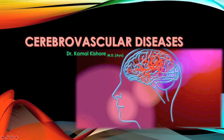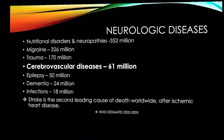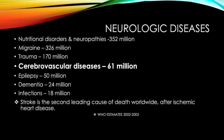Today we will talk about cerebrovascular diseases. The most common neurological diseases are nutritional disorders, for example vitamin B, C, and iron deficiencies causing neuropathies. Second most common are migraines. Third is trauma directly to the nervous system, such as brain or spinal cord trauma. The third most common neurological diseases are cerebrovascular diseases, which we will discuss today.